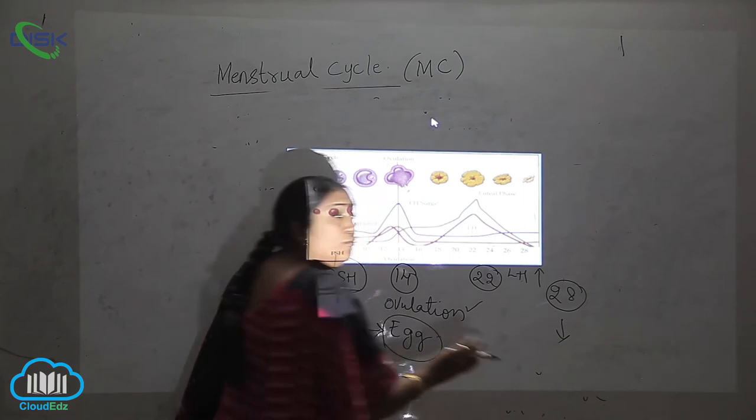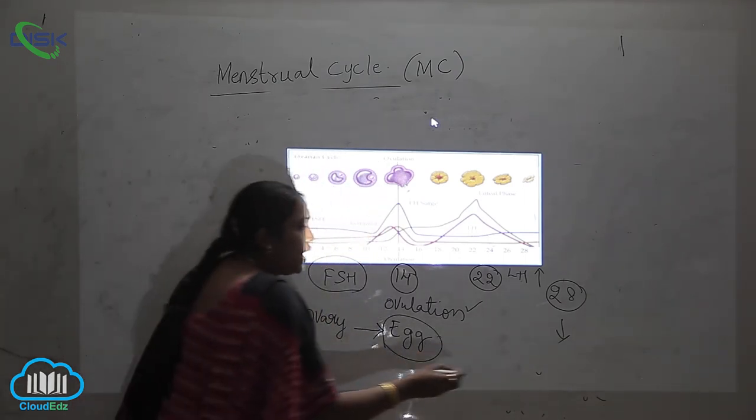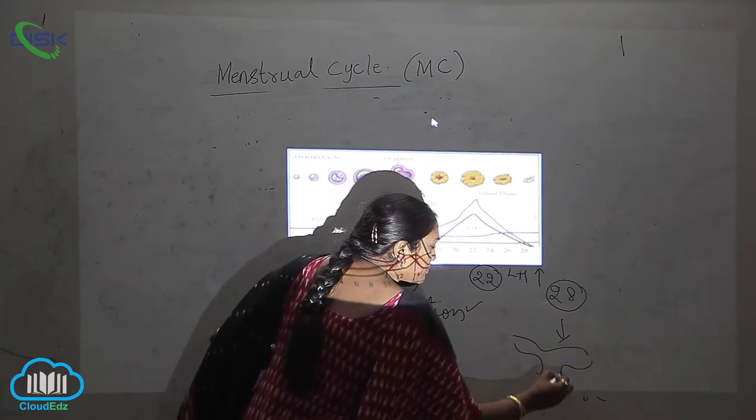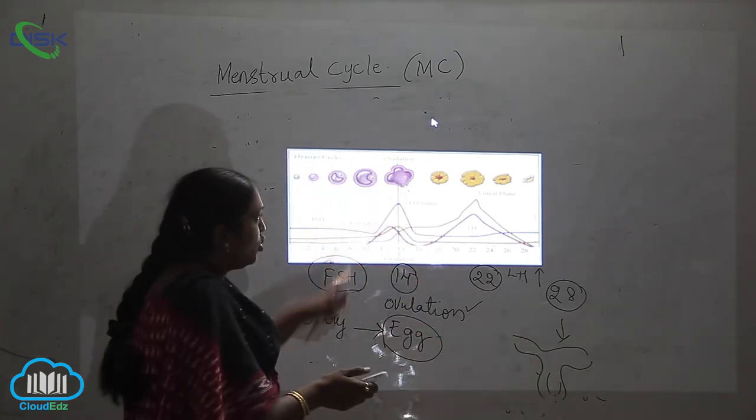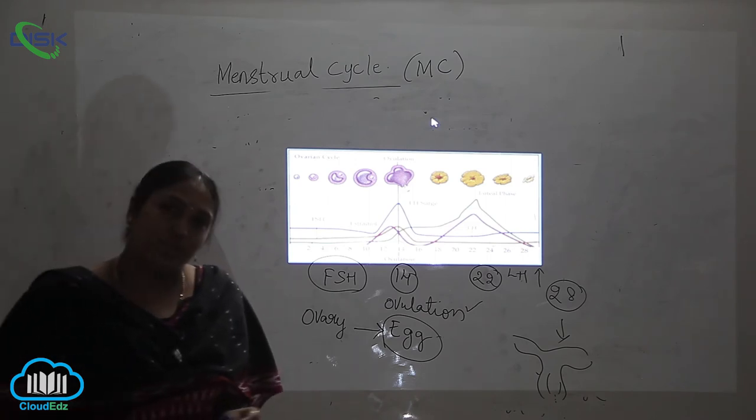The endometrium will fall, it falls and the blood oozes out from the vagina. So this is called bleeding. This is the complete menstrual cycle which occurs in the females. Hope you have understood it.